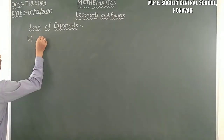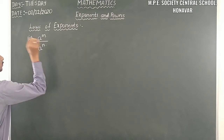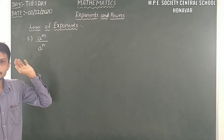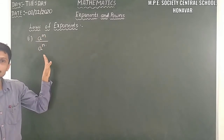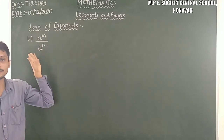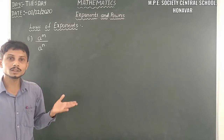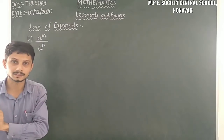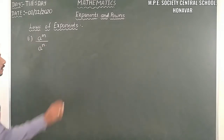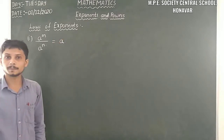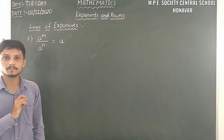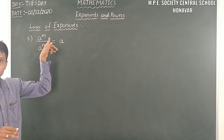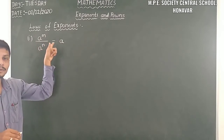So let us take a raised to m divided by a raised to n. Here just observe — there are two exponents. The base is same but the exponents are different, and it is in the form of division, numerator and denominator. So we have to express this division in the form of a single base. The base is common here. What happens to the exponents? When we bring the denominator up to the numerator, the exponent becomes minus n, so we get a raised to minus n.